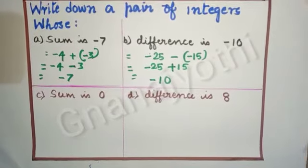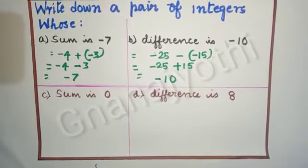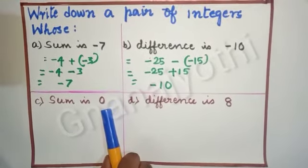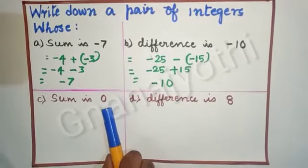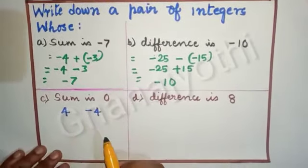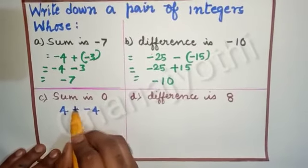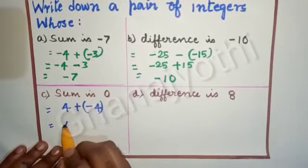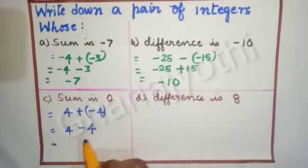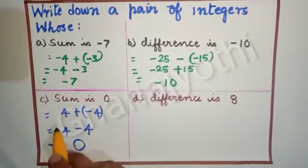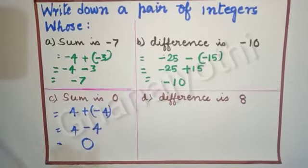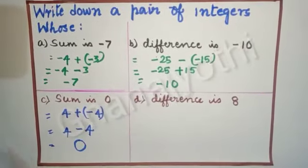Next, we will see: sum is 0. The sum is 0, which means we have to take the addition. When it comes to sum is 0, we have to be very careful. When we take a number and it is subtracted with the same number, then we get the sum is 0. When positive 4 is subtracted from 4, we get 0. So let me write it as sum: 4 plus into minus, it is minus 4. When we simplify this, 4 minus 4, the sum we get is 0. Hence, the required numbers are 4 and minus 4 — plus 4, minus 4. You can take plus 1, minus 1, or plus 10, minus 10. Like this, the sum we get is absolutely 0.